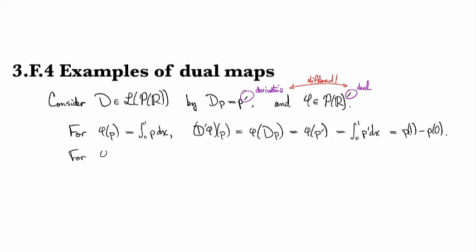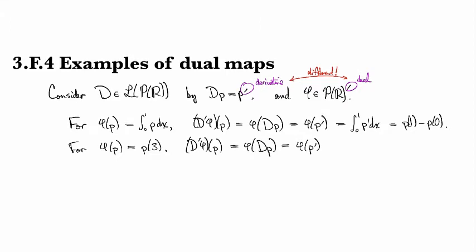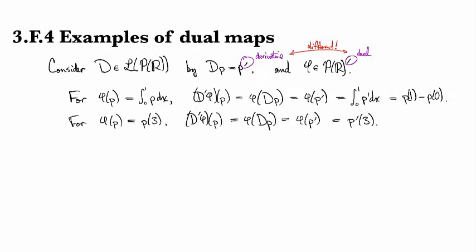Okay, let's look at a couple more examples and we'll see a bit of a trend. So if we take phi to be an evaluation functional, so like let's say evaluation at 3, then D prime of phi applied to p once again, this is going to be phi of Dp, which is phi of p prime. And in this case, phi works by evaluating its argument at 3. So this is going to be p prime of 3.